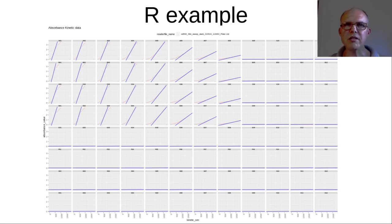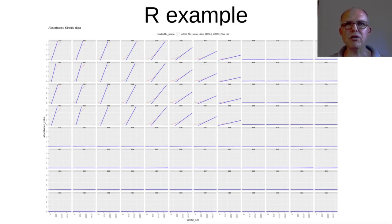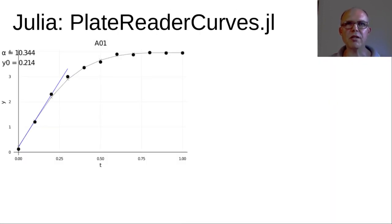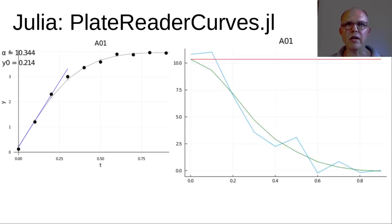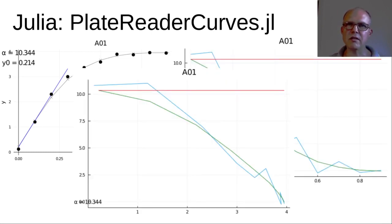So over the years I have developed an R package for working with these files and producing plots like this one, which shows the actual measured data together with a fitted curve that represents the enzyme activity. Lately, I've been turning this into Julia, and here I can make plots like this, or like this, or like this. Connect with me if you want to talk about what these plots are showing.